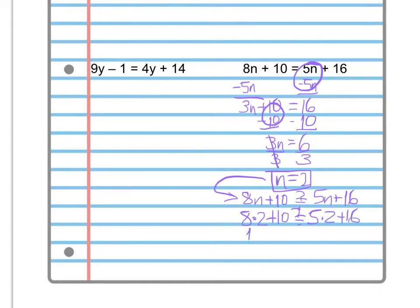8 times 2 is 16 plus 10 on the left side. And again, does that equal? We don't know yet, so we just put a question mark over our equal sign. 5 times 2 is 10 plus 16. Well, 16 plus 10 is 26, and 10 plus 16 is 26. Does 26 equal 26?